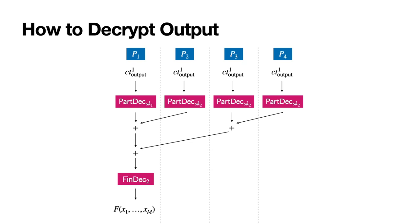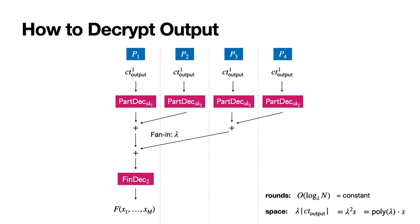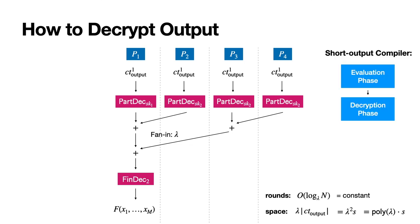If we set the fan-in of this tree along with the distribution tree to be lambda, then we get that the protocol satisfies the requirements of the model. The rounds required for this phase is order of log base lambda of n, which is a constant, and the multiplicative space blowup is a small polynomial in lambda. We now have a working compiler for any protocol with short output, which works in two phases: first the evaluation phase, where we wrap the underlying insecure protocol in FHE, and second the decryption phase which we just went over.